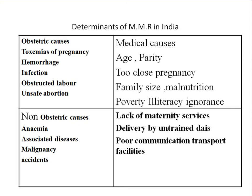Lack of maternity services includes deliveries conducted by untrained TBAs who do not maintain the five cleans: clean surface, clean cut, clean tie, clean blade, and clean hands — with no application of anything to the umbilical stump. If the five cleans are maintained, infection can be prevented. Deliveries by untrained TBAs are associated with very high maternal mortality.